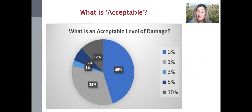indicated that zero or one percent was the acceptable level. More surprising to me was the 22 percent that indicated three to 12 percent was acceptable. In general, we'd like to manage to less than half a percent and preferably much lower than that.